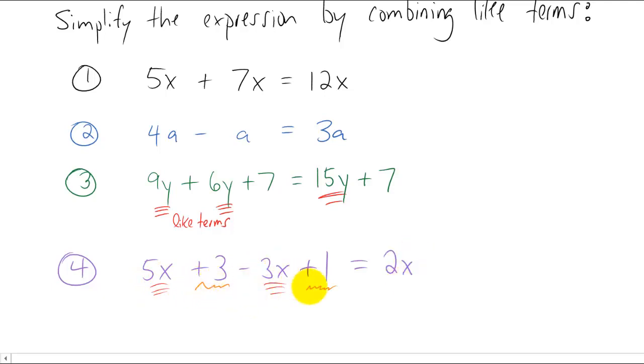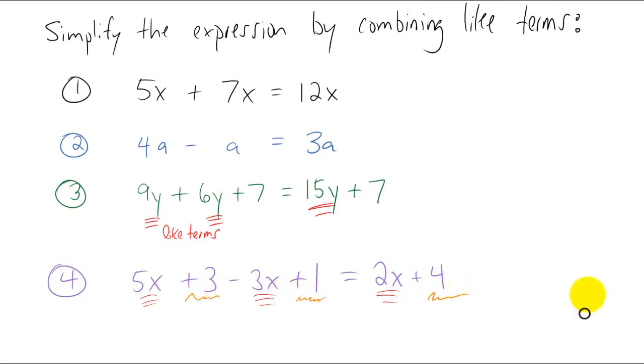And then we have to look at the plus three and the plus one. If you have three and you add to that one, you're left with four. So what we did there is we combined the like terms 5x and -3x to give 2x. And then we combine the like terms positive three and positive one to give four.